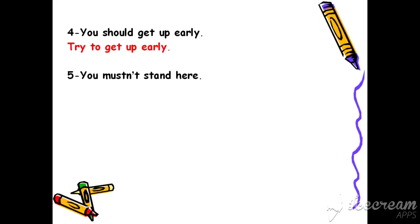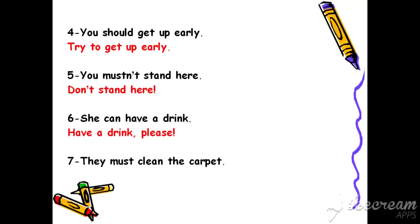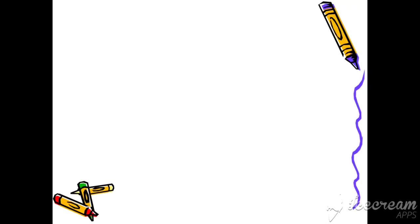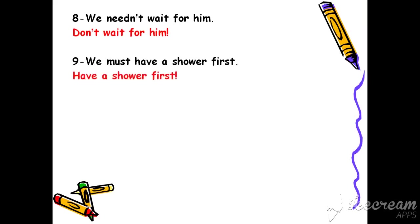'You mustn't stand here' — مع أنه حط mustn't فبدي أستخدم don't: 'Don't stand here'. 'She can have a drink' — 'Have a drink' — because it's a request. 'They must clean the carpet' — 'Clean the carpet'. 'We needn't wait for him' — يعني مش بحاجة ننتظر — 'Don't wait for him'. 'We must have a shower first' — 'Have a shower first' أو 'Let's have a shower first' — ممكن أبلش بـ let's إذا كنت بحكي عنا إحنا.